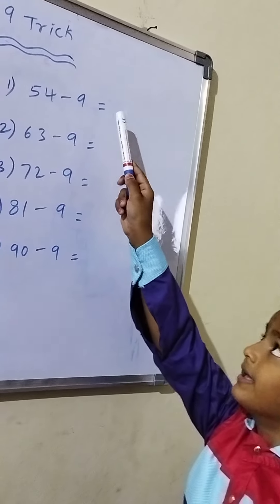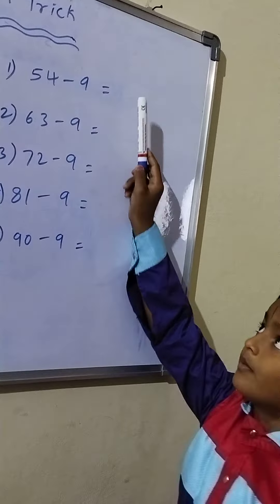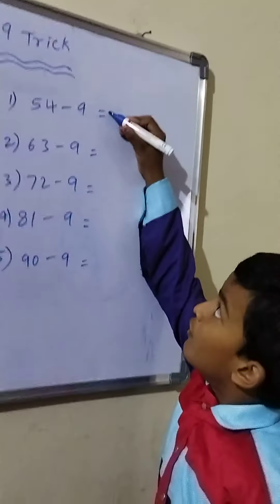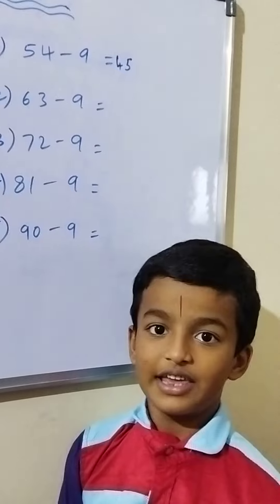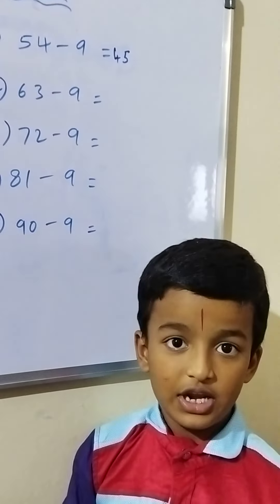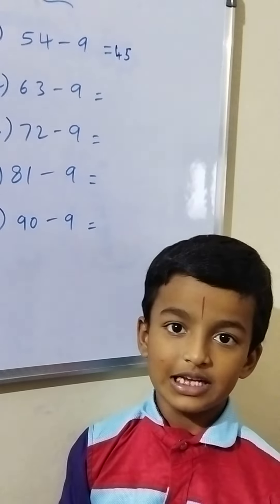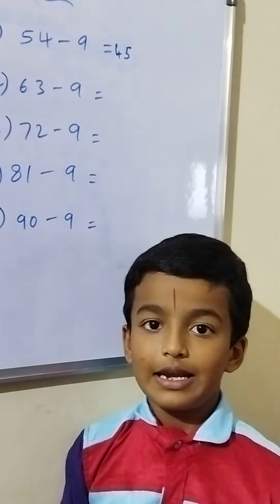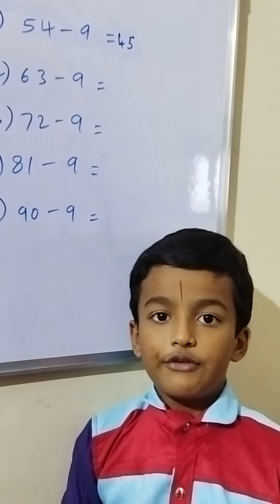63 minus 9: subtract 10 to get 53, then add 1 to get 54.